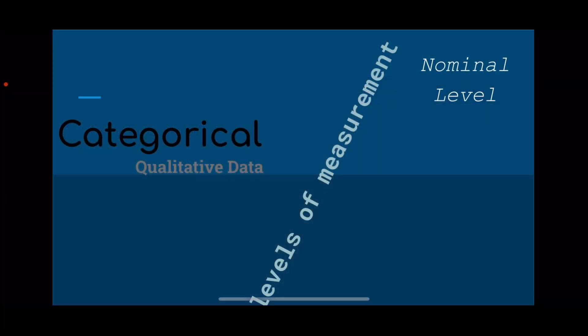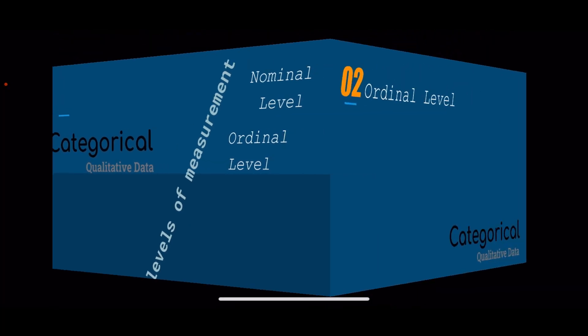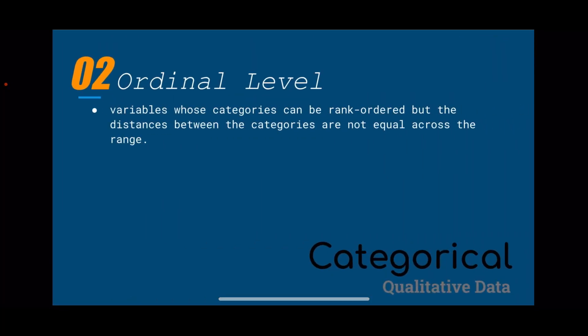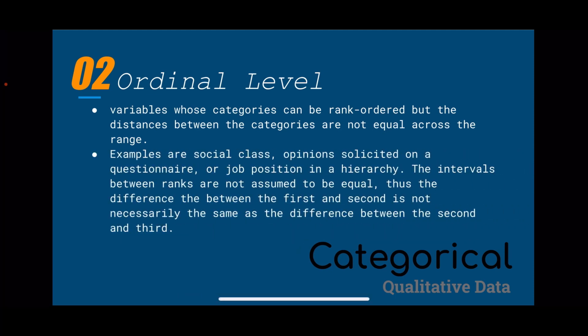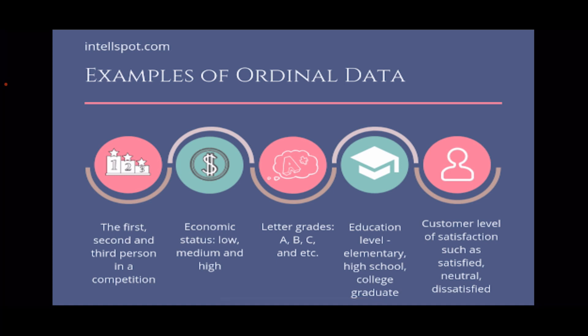The next level of measurement is ordinal level. It is defined as variables whose categories can be rank ordered, but the distances between the categories are not equal across the range. Examples include social class, opinions solicited on a questionnaire, and job position in order. The intervals between ranks are not assumed to be equal — the difference between first and second is not necessarily the same as the difference between second and third, such as the first, second, and third person in a competition.